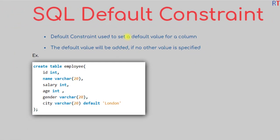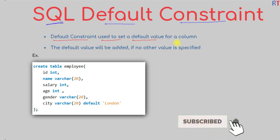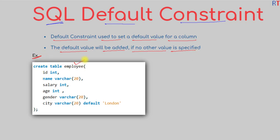In this video we're going to talk about the DEFAULT constraint in Structured Query Language. The DEFAULT constraint is used to set a default value for a column — the default value will be added if no other value is specified. For example, we have the employee table with a DEFAULT constraint on the city field, so whenever we do not specify any value for city, the default value 'London' will be used.